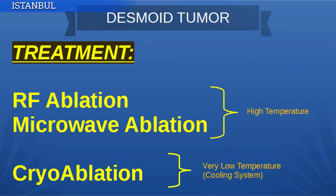We can easily say that while using RF and microwave ablation, we are burning the tumor, burning the tissue. On the other hand, in cryoablation, we give very, very cool temperature. We are freezing the tissue by using cryoablation, so we call it a cooling system, unlike RF or microwave ablation.